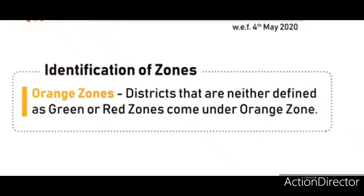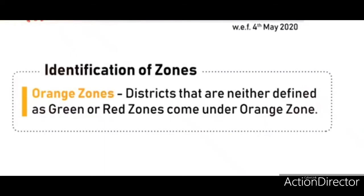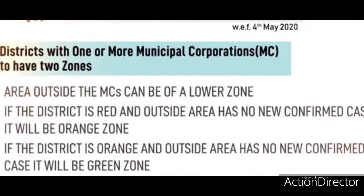Districts with one or more municipal corporations are to have two zones. The area outside of municipal corporations can be of a lower zone. If the district is red and the outside area has no new confirmed case, it will be orange zone. If the district is orange and the outside area has no confirmed case, it will be green zone.